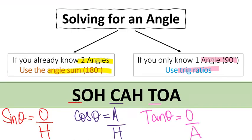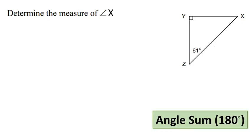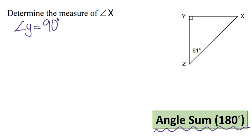Let's do our first example. Determine the measure of angle x. We need to find angle x, and just by looking at it, we can tell that two of the angles are given. That means we are going to use the angle sum theorem. We know angle y is 90 degrees, we know angle z is 61 degrees, and we need to find angle x.